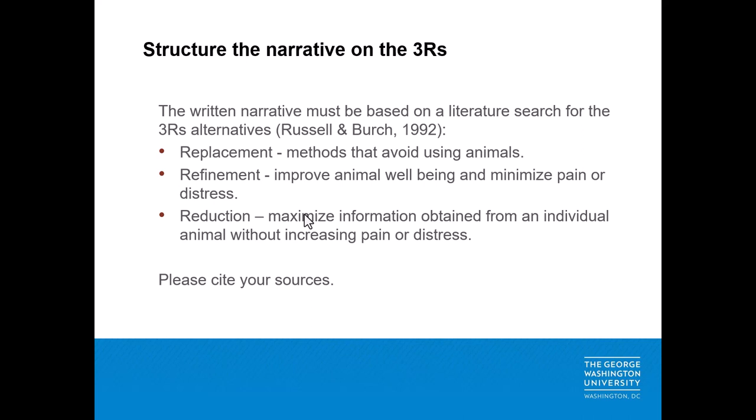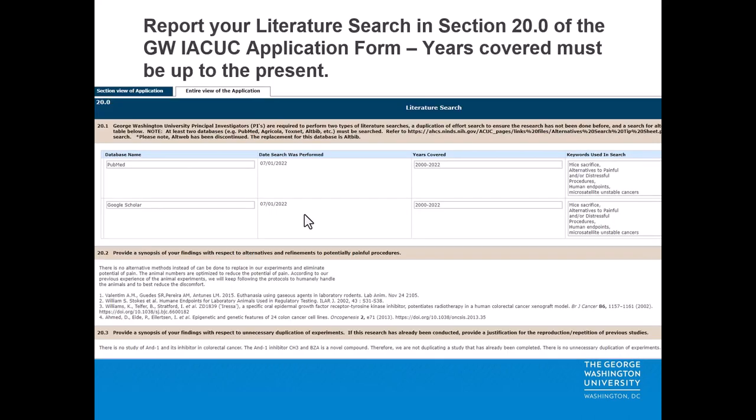Reduction includes using new technologies, changes to experimental design or conditions, and the use of appropriate statistical methods. The guide for the care and use of laboratory animals states reduction is not a rationale for reusing animals that have already undergone a procedure if the well-being of the animal would be compromised. Methods that introduce severe or chronic pain must include a humane endpoint.